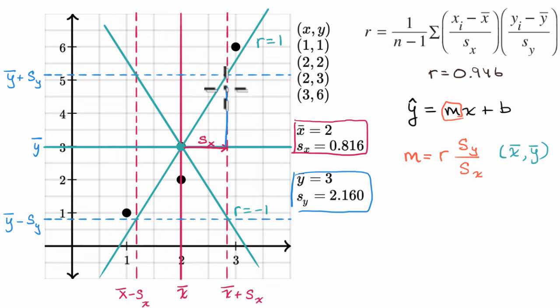Well you would move up r times the standard deviation of y. And as we said, if r was one you would get all the way up to this perfect correlation line. But here it's 0.946 so you would get up about 95% of the way to that. And so our line, without even looking at the equation, is going to look something like this. Which we can see is a pretty good fit for those points.